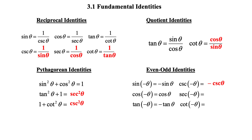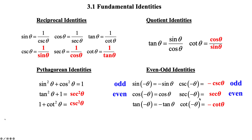Our even and odd identities: sine of negative theta equals negative sine theta. Cosecant of negative theta equals negative cosecant theta, which is its reciprocal of sine, so that should be true. Cosine of negative theta equals cosine theta, and its reciprocal, secant of negative theta equals secant theta. Tangent of negative theta is negative tangent theta, so its reciprocal, cotangent of negative theta, must also be negative cotangent theta. The ones with the negatives are odd functions; the ones where the sign stays the same are even functions. So cosine and secant are the only even identities; the others are odd.